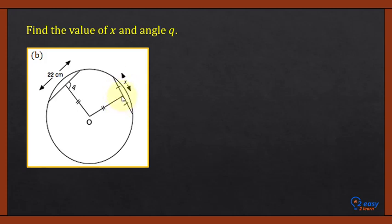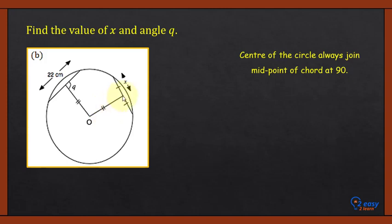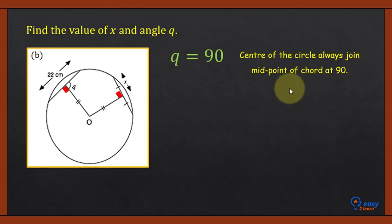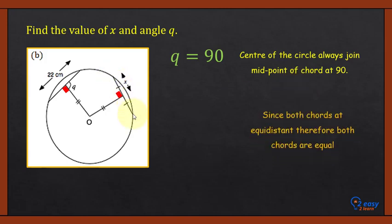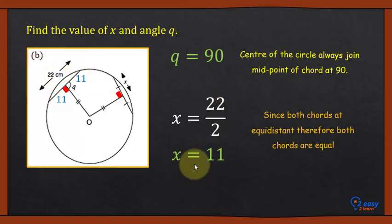When the center of the circle joins the midpoint of a chord, it is always perpendicular — so there is a 90-degree angle. Because both chords are at equidistance, angle Q equals 90 degrees. Since the chord is 22 centimeters, half is 11 centimeters. Therefore x equals 22 divided by 2, and the value of x is 11.